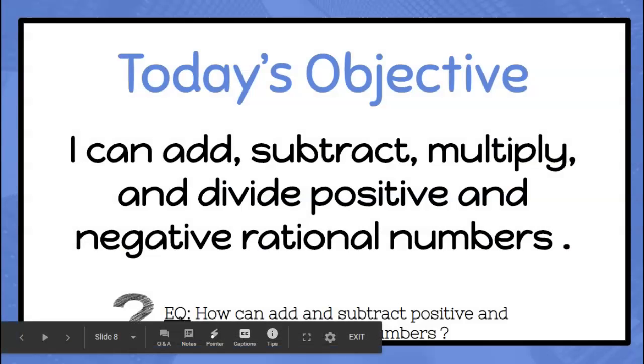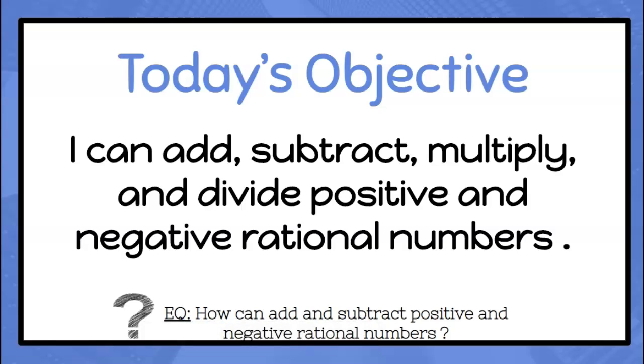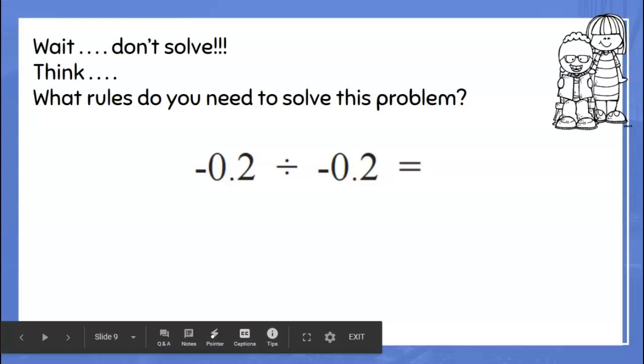In chapter four, we have been taking the information we learned in chapter two and chapter three and putting it together. Nothing new, just combining rules. We've learned how to add, subtract, multiply, and divide positive and negative rational numbers.